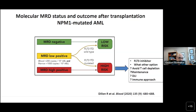The final flowchart: if MRD negative, you are low risk; if MRD high positive, you are high risk. For the MRD low-positive population, if you have FLT3 ITD wild type, you fall into the low-risk group, whereas FLT3 ITD mutated places you in the high-risk group. For high-risk patients, options include FLT3 inhibitors, avoiding T-cell depletion from stem cell transplant, maintenance with hypomethylating agents, donor leukocyte infusions, or other immune approaches to mitigate risk.